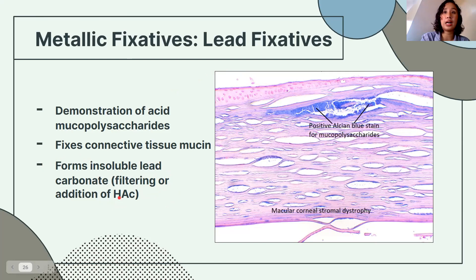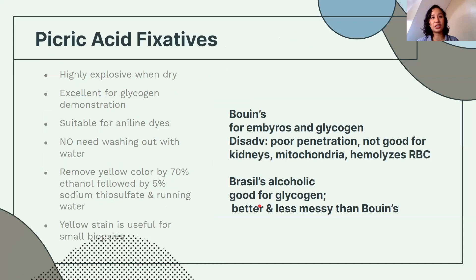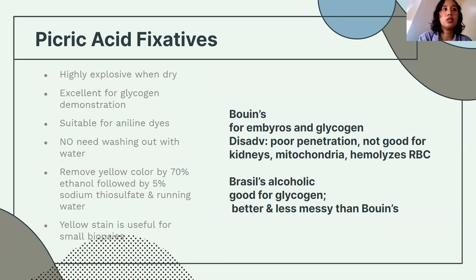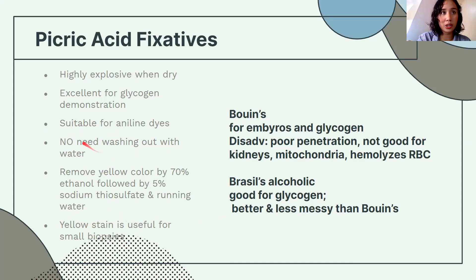Picric acid fixatives — remember the two names: Bouin's and Brasil's. Bouin's is yellow — a useful feature for identifying small biopsies. Advantages: no need to wash out with water, suitable for aniline dyes, good for demonstrating glycogen. Disadvantage: do not allow picric acid to dry out because it can be explosive. To remove the yellow color, expose to 70% ethanol followed by 5% sodium thiosulfate. Bouin's is used for glycogen and embryos.